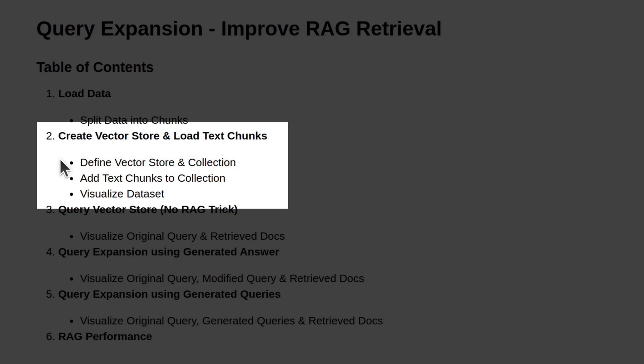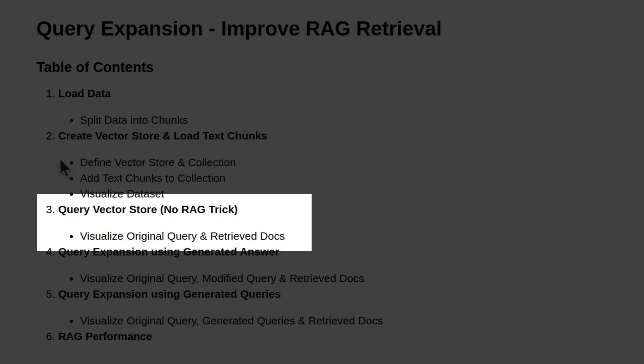After loading the dataset to the vector store, we'll also visualize the text chunks by projecting them onto a lower dimension. In the third section, we query our vector store to search for relevant documents without any RAG trick. We use a simple plain user query to search for the relevant document. After retrieving the relevant documents, we visualize the dataset, original query, and retrieved documents by projecting their embeddings onto the lower dimension.